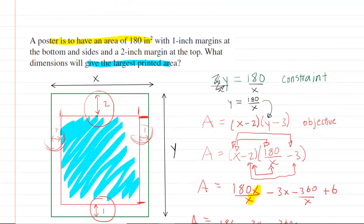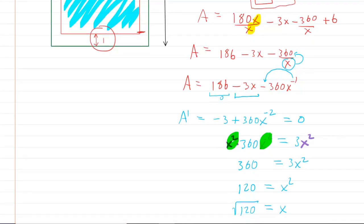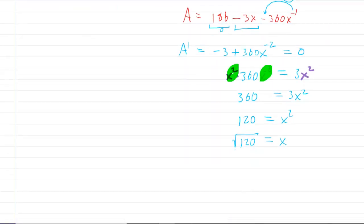Now we do recall that the question wanted dimensions to give the largest printed area. So we're trying to maximize the area of the printed region. We have a critical value of X, but we haven't technically proved that it maximizes the area. There are two ways to prove that it maximizes. We could either do the first derivative test or the second derivative test.